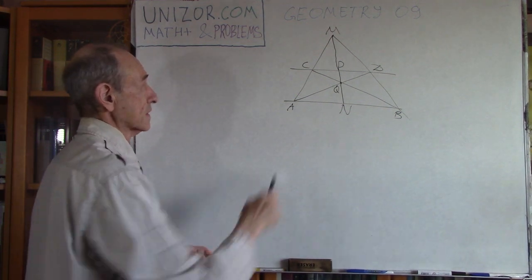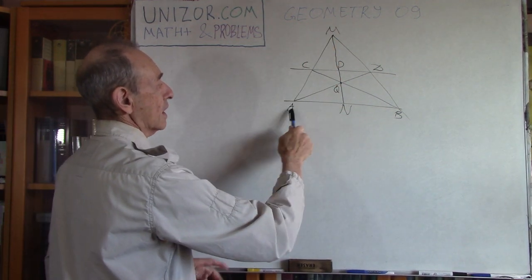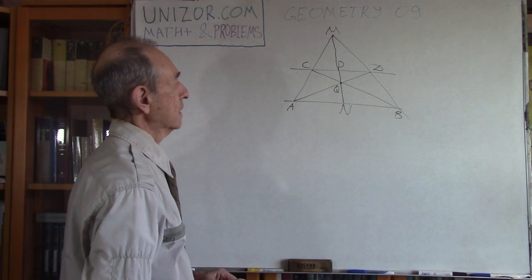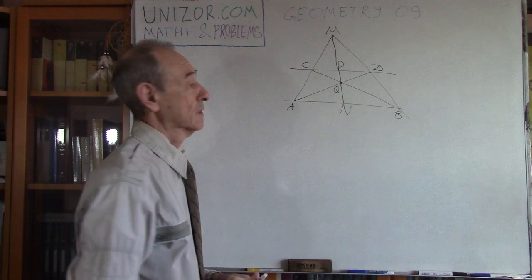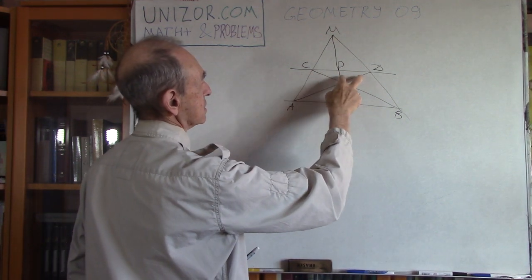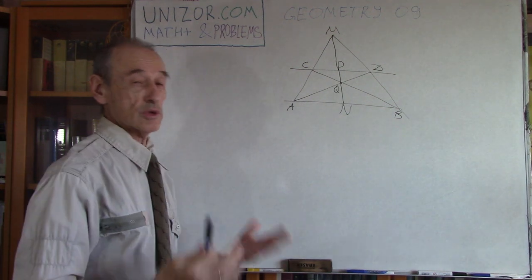Let's call it P and Q. So my theorem is that MN divides both AB and CD in half. So AN is equal to MB, CP is equal to PD. I'm going to prove it.